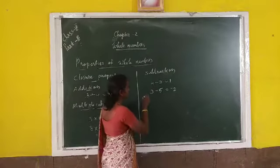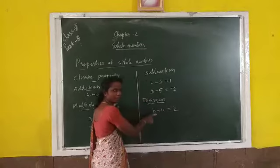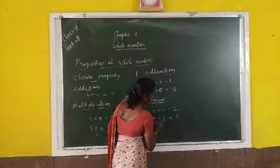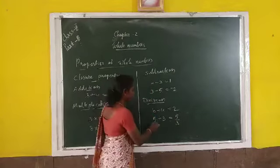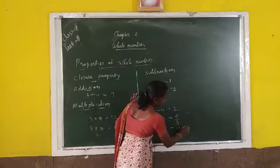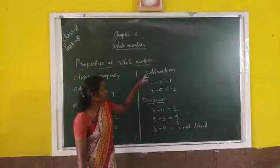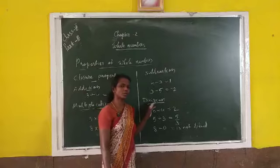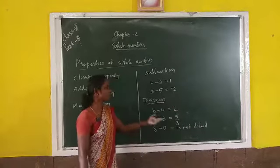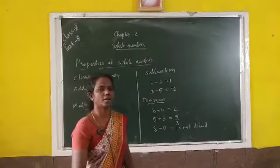In the case of division, 8 divided by 4 equals 2, which is a whole number. But 5 divided by 3 is not a whole number, because 5 is not completely divisible by 3. Also, 8 divided by 0 is not defined. So when we divide any two whole numbers, we may or may not get a whole number. Therefore, whole numbers are not closed under division.